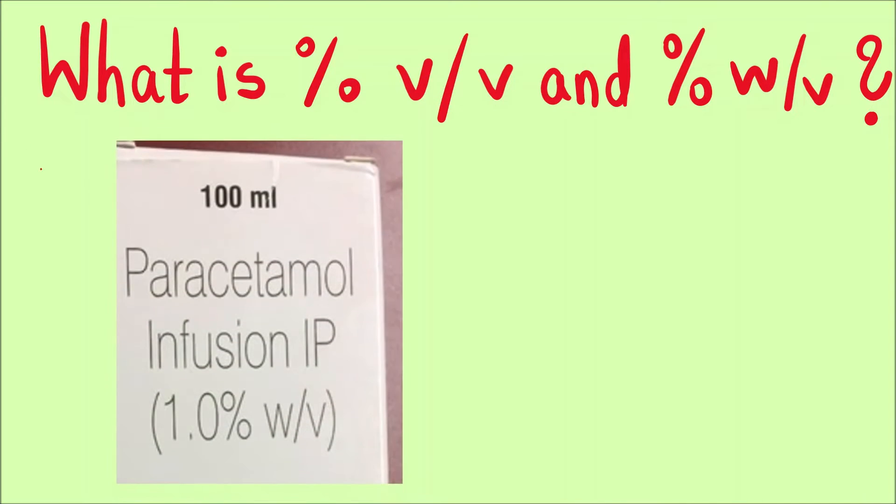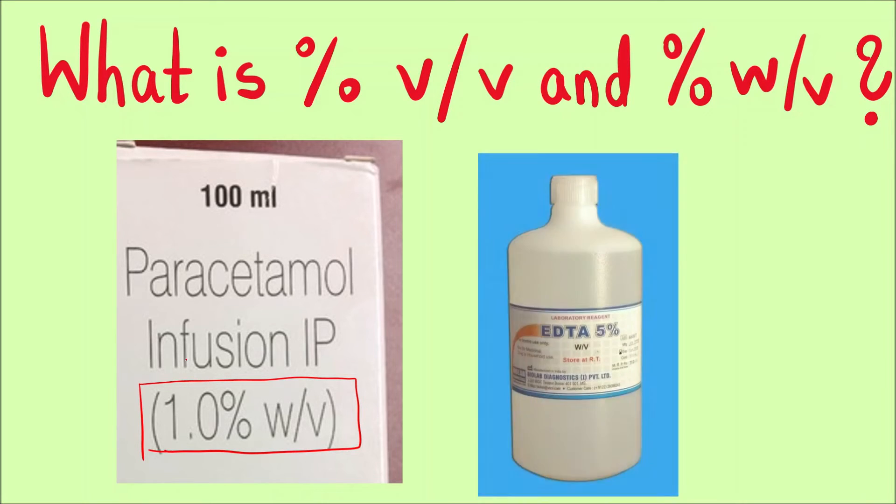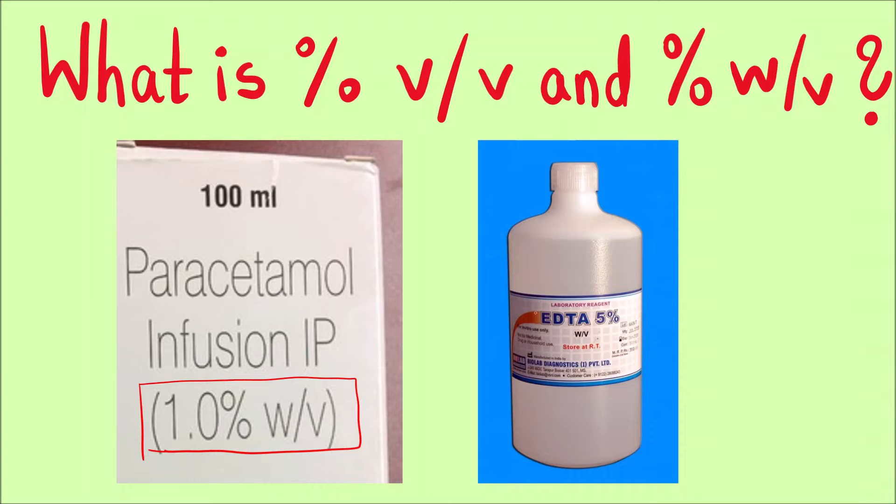You might have seen in medicine bottles, like this injection of paracetamol where it is written 1% weight by volume, or in reagent bottles in a chemistry lab you might have seen 5% weight by volume, or sometimes it is written 1% volume by volume or 10% volume by volume. So what is the meaning of all these we will see in this video.